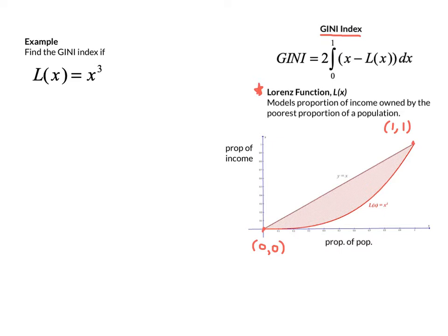...because if we look at a point here, let's say 0.5, the bottom half of a population is going to own much less than half of the wealth in that country. So we know it's going to be x minus L of x there, and then the economists like to double that.